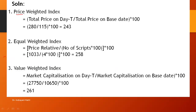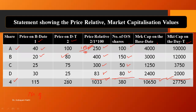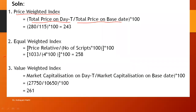For price weighted index, the formula is: total price on day T divided by total price on the base date, multiplied by 100. The total price on day T from the table is 280, and the total price on the base date is 115. So, 280 divided by 115, multiplied by 100. The result is 243. So, the price weighted index value is 243. This is the answer for the first method.